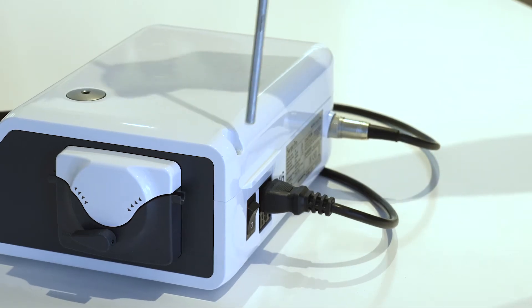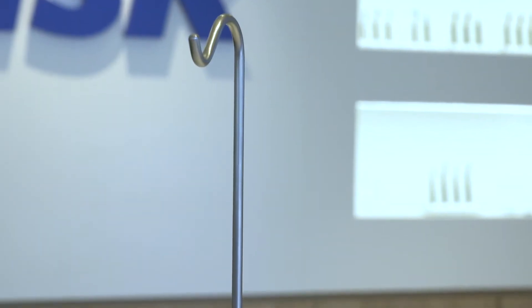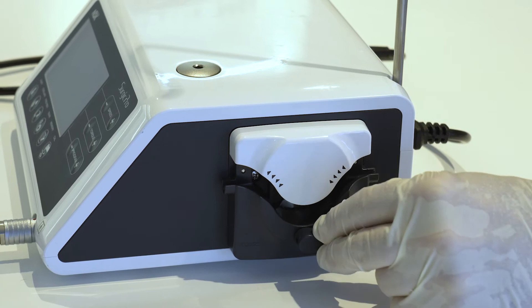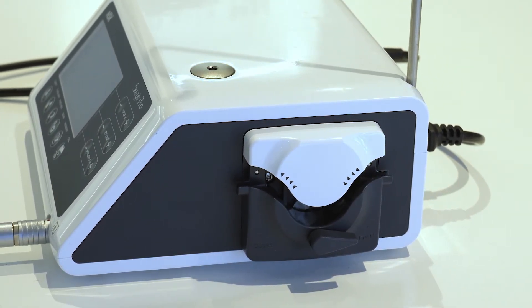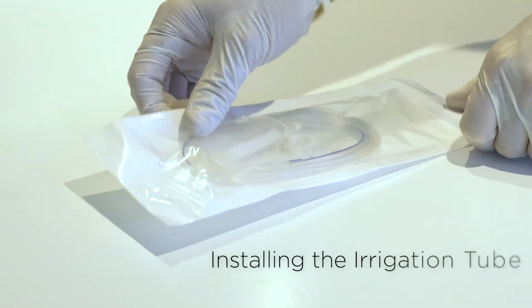Mount the coolant solution hanger post onto the holder on the control unit. Ensure the pump cover lever is in the open position with the irrigation tube needle towards the backside of the control unit. Use only NSK tubing.